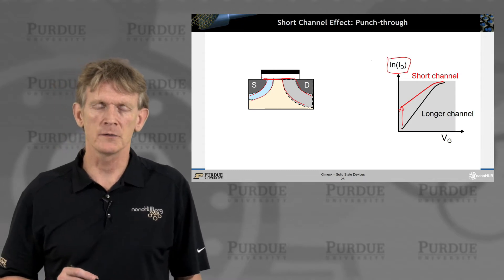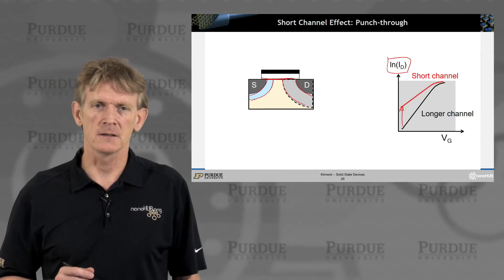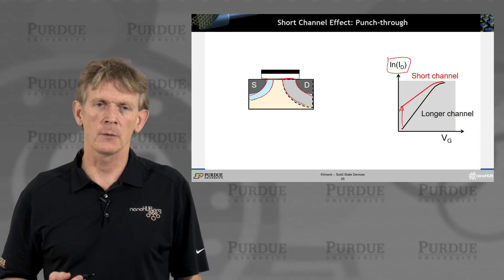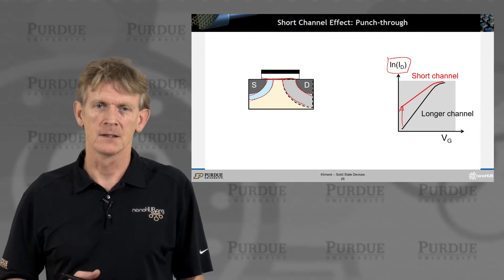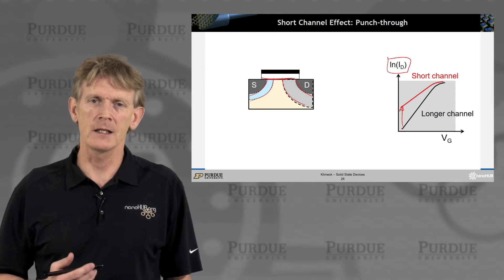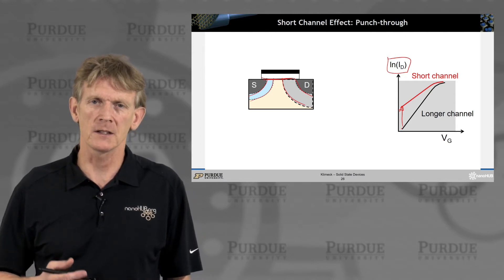As I had shown before in the previous section, the off-current is really determining the leakage power in these transistors. So the switch is becoming really leaky and consuming a lot of power. That's a bad thing.